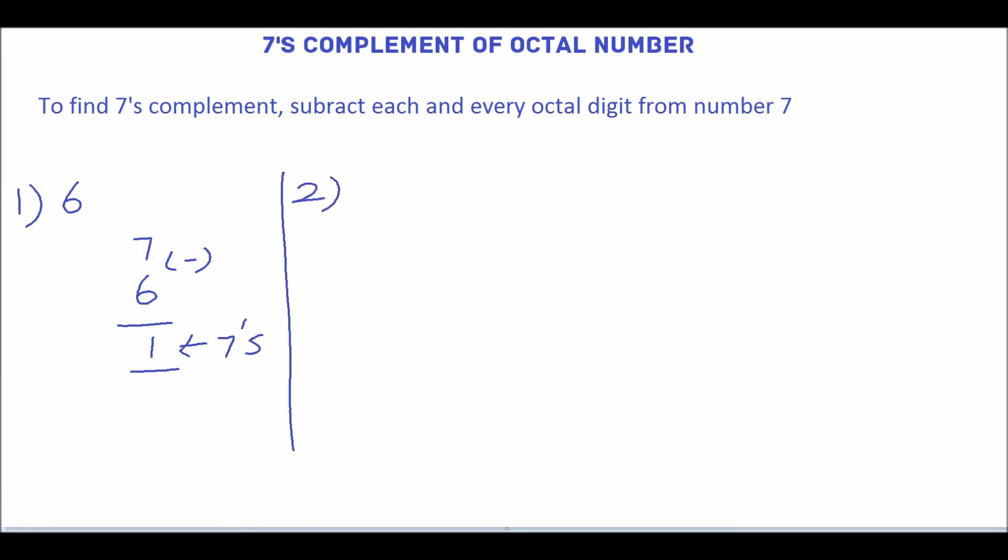The second example is 65. Write the number 65. Subtract the digits 5 and 6 from 7 individually. We have to subtract this. So, 7 minus 5 is 2. 7 minus 6 is 1. So, 1, 2 is the 7's complement of the octal number 65.